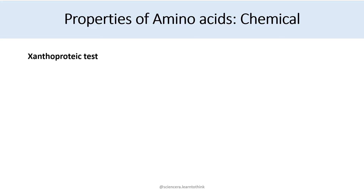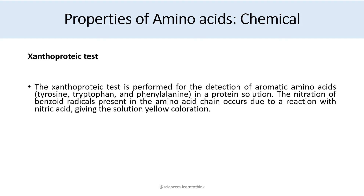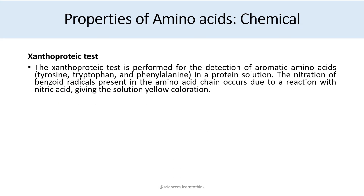Next is the xanthoprotein test. The xanthoprotein test is performed for the detection of aromatic amino acids such as tyrosine, tryptophan, and phenylalanine in a protein solution. The nitration of benzoid radicals present in the amino acid chain occurs due to the reaction with nitric acid, giving the solution a yellow coloration.